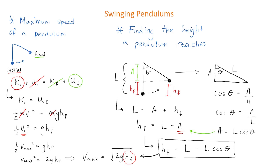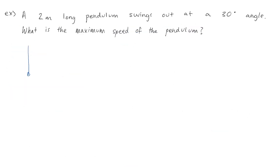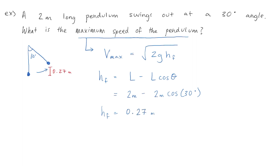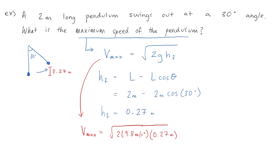Let's do an example to practice using these equations. We have a 2-meter long pendulum which swings out at a 30-degree angle, and we want to know the maximum speed of the pendulum. To answer this, we use our maximum speed equation. First, we solve for the height the pendulum reaches using the height equation, plugging in the length and the angle. After doing the math, we find the height the pendulum reaches is 0.27 meters. Using the maximum speed equation, we find that the maximum speed the pendulum reaches is about 2.3 meters per second.